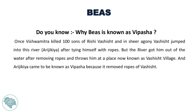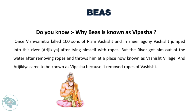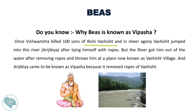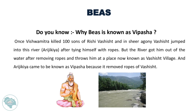Beas is known as Vipasha because of a mythological story — Vishwamitra killed 100 sons of Rishi Vashisht, and in agony, Vashisht jumped into this river after tying himself with ropes. The river removed all the ropes and brought him out, depositing him at a place now known as Vashisht village. The river came to be called Vipasha — meaning 'one who removed the ropes.'